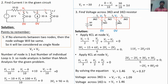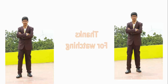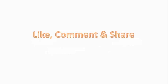To summarize using node analysis: find the nodes, assume the node voltage is higher than other potentials, assume all currents flow out from the node, apply Kirchhoff's current law, solve the equations to get the node voltage. If there is no element between two nodes, the node voltages will be the same. Thank you. Click the subscribe button and hit the bell icon for notifications, like, comment, and share. See you next time.